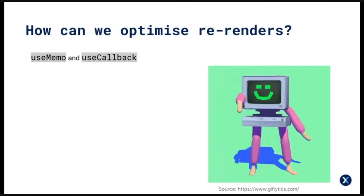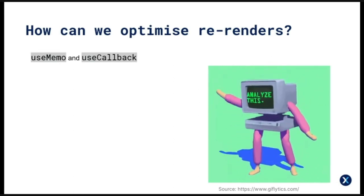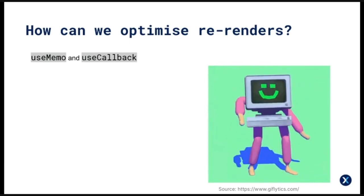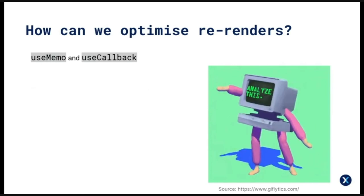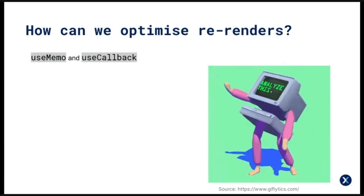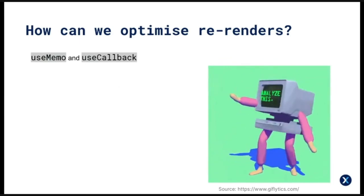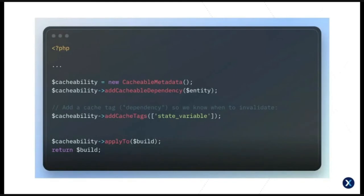There are times when certain components have expensive operations or you may need a lot of re-renders. React provides two hooks to optimize in these cases: useMemo and useCallback. These hooks allow you to tell React that your component should be treated like a pure component — it doesn't need to be re-rendered unless some of its given dependencies change. I find it easy to think of useMemo and useCallback as similar to caching in Drupal — you're letting the system know that under certain conditions the output or function doesn't need to rerun.